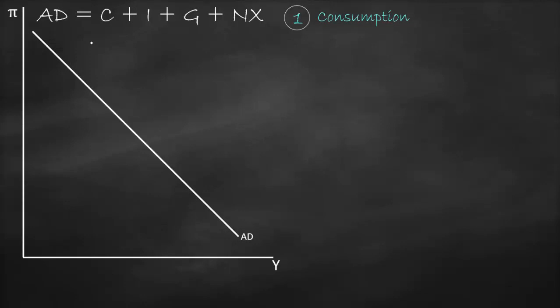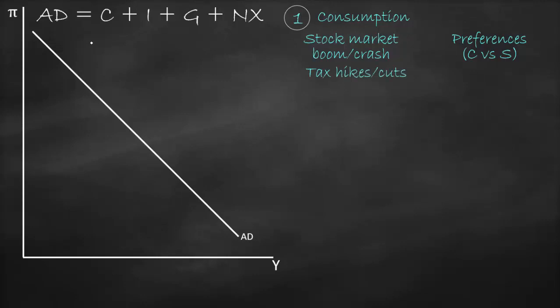The first variable is consumption. Factors affecting consumption include: a stock market boom, which makes people wealthier so they consume more, shifting AD to the right; a stock market crash, which lowers wealth and shifts AD to the left. Preferences for consumption over saving increase consumption; preferences for saving reduce it. Tax cuts lower income tax, raise disposable income, increase consumption, and shift AD to the right — and vice versa for tax hikes.